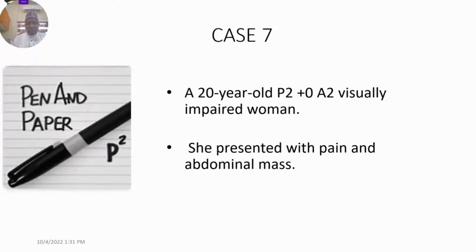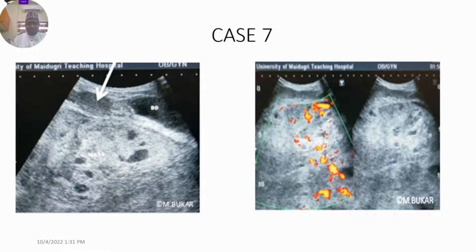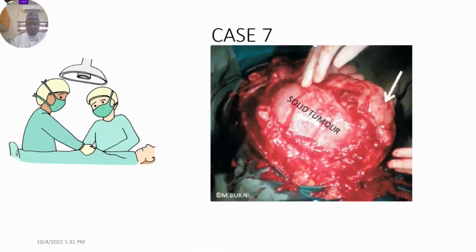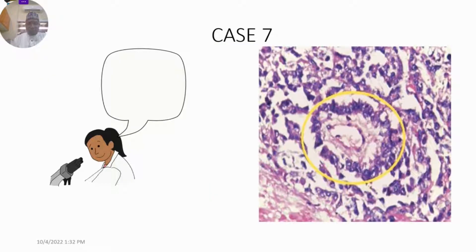Case 7 was a 20-year-old para 2 visually impaired woman who presented with abdominal pain and an abdominal mass. We inputted all the ultrasound scan information. The model showed risk of benign lesion, risk of malignant lesion, with the highest being stage 1 disease. Clinical assessment was stage 4 disease. She had surgery and histopathology showed Call-Exner bodies, so it was a yolk sac tumor.